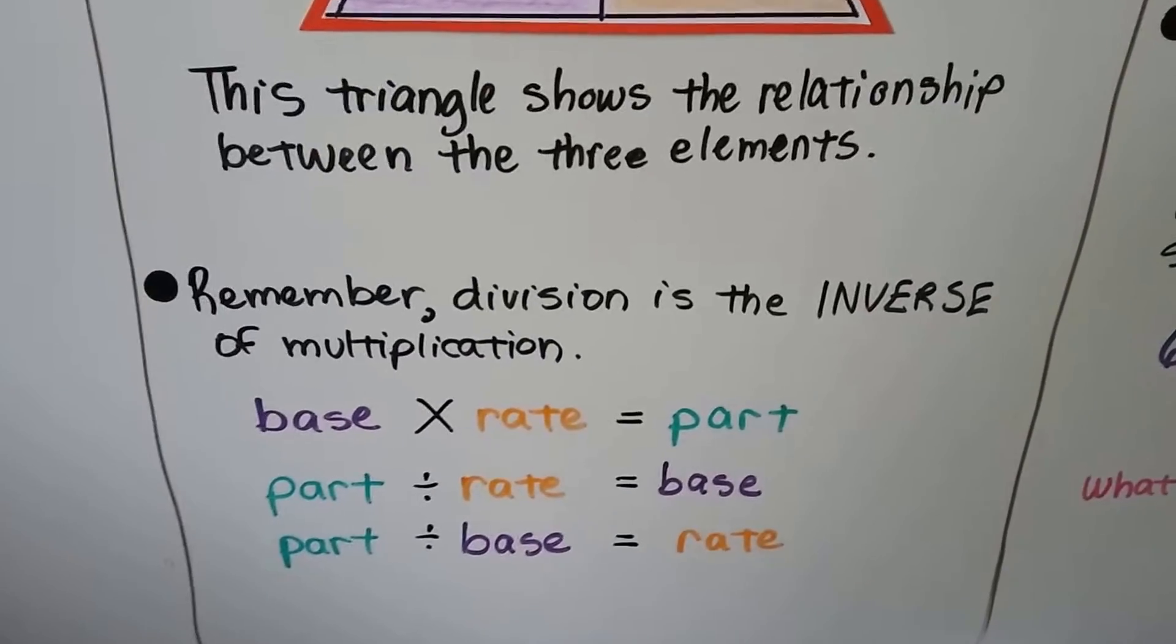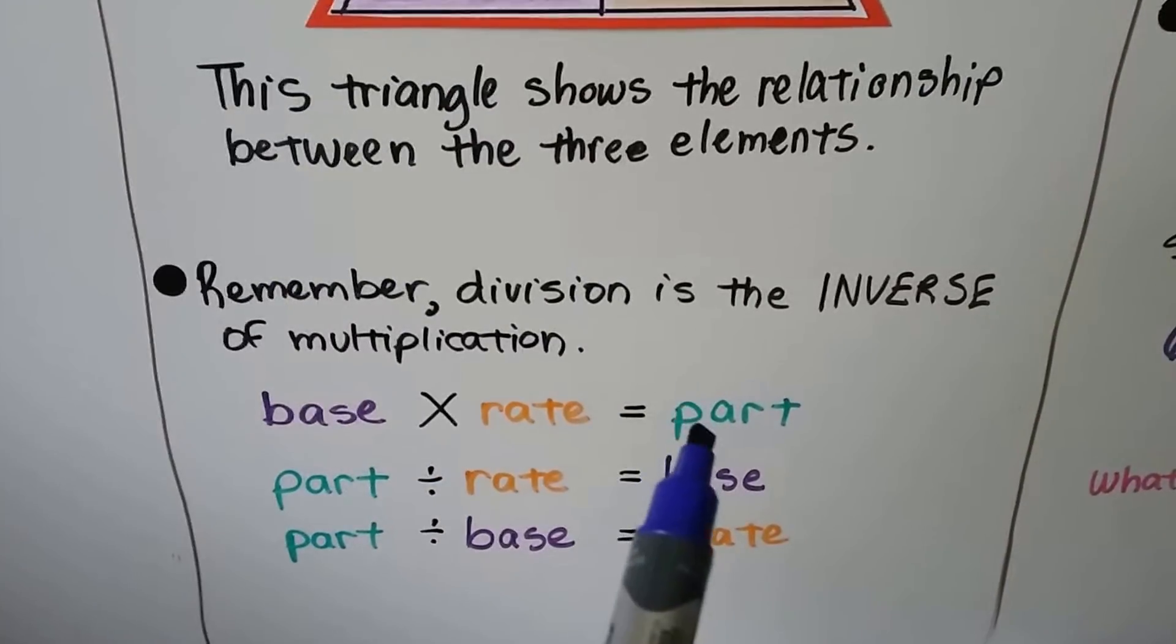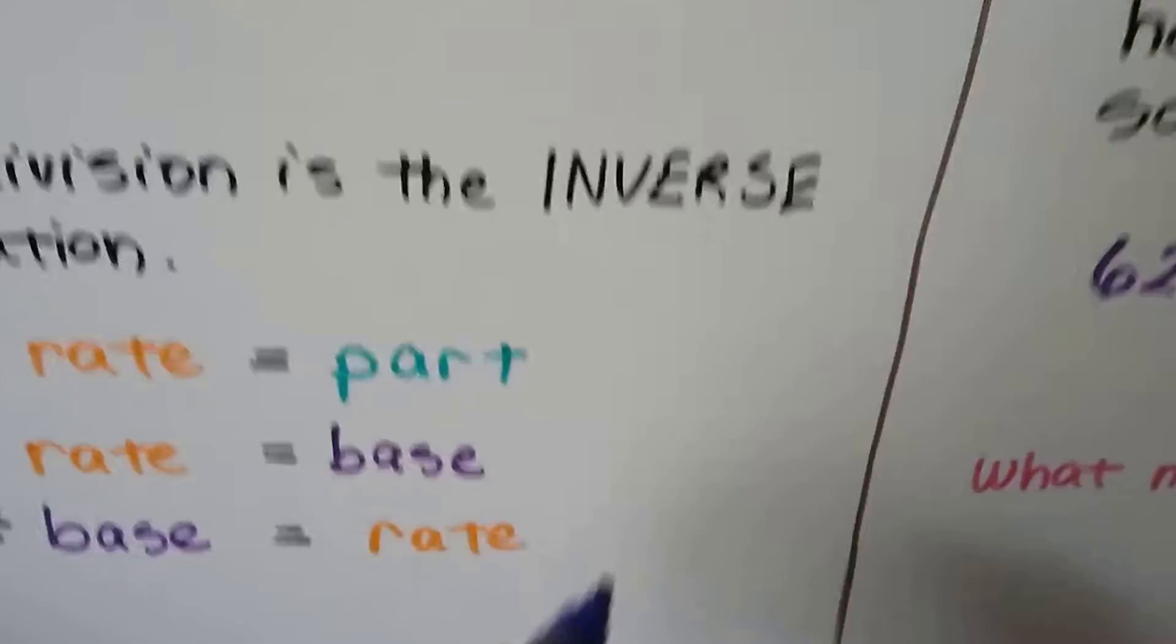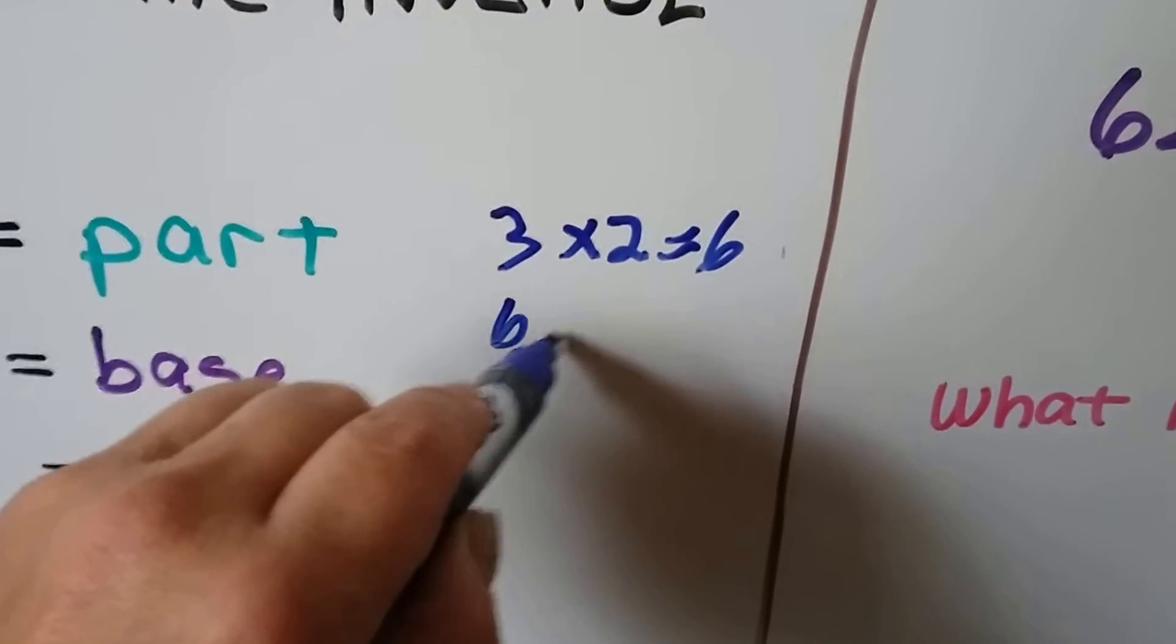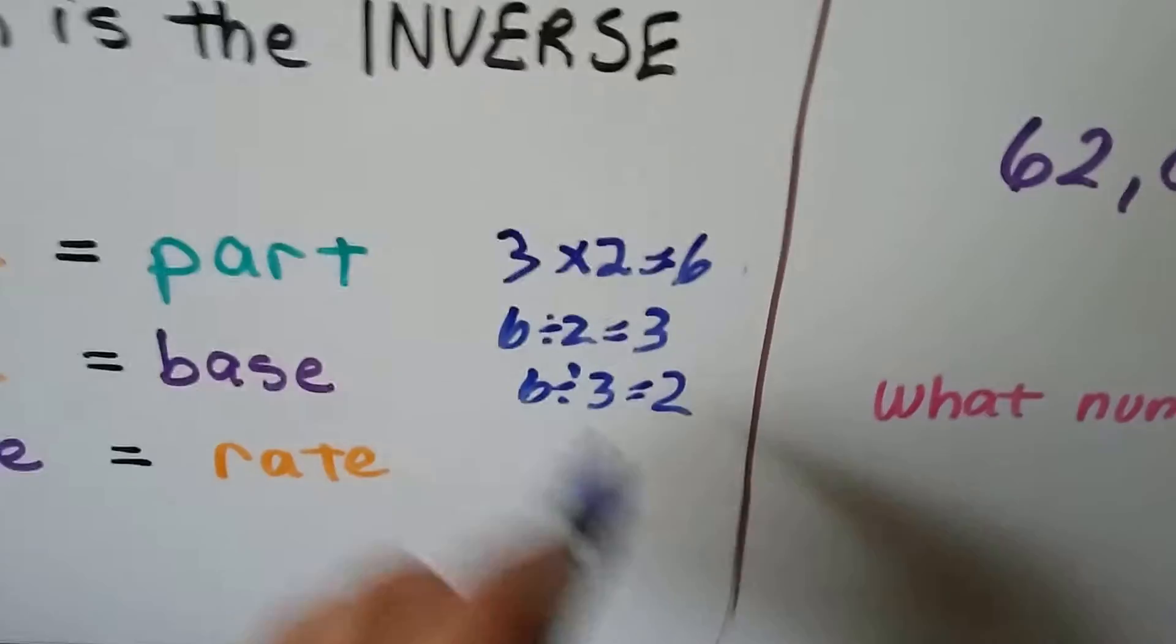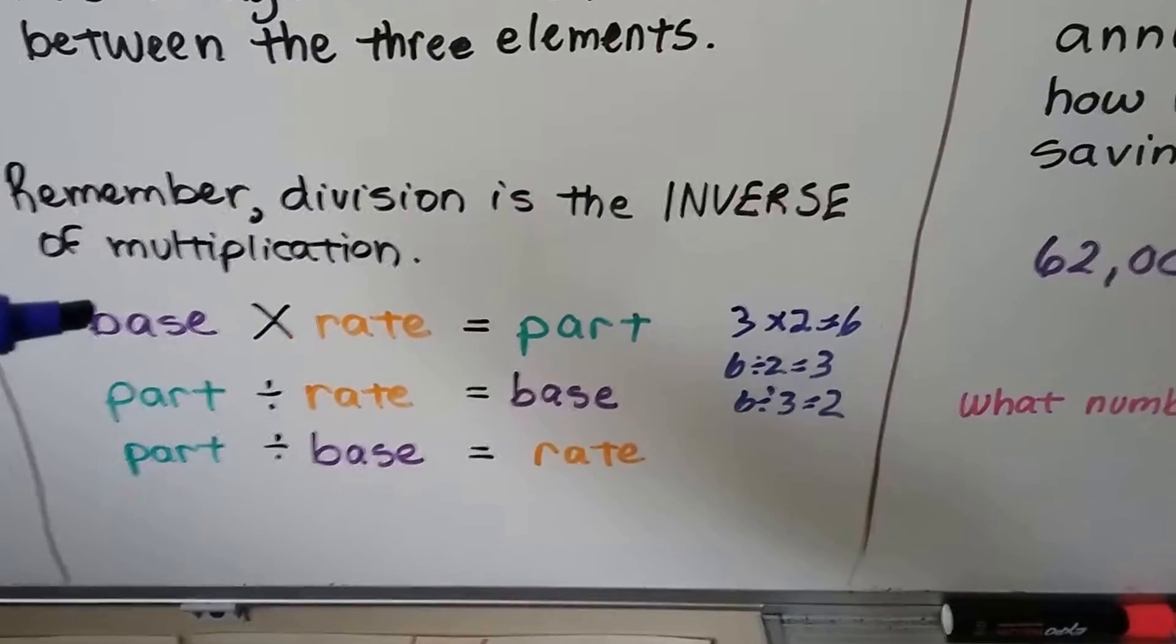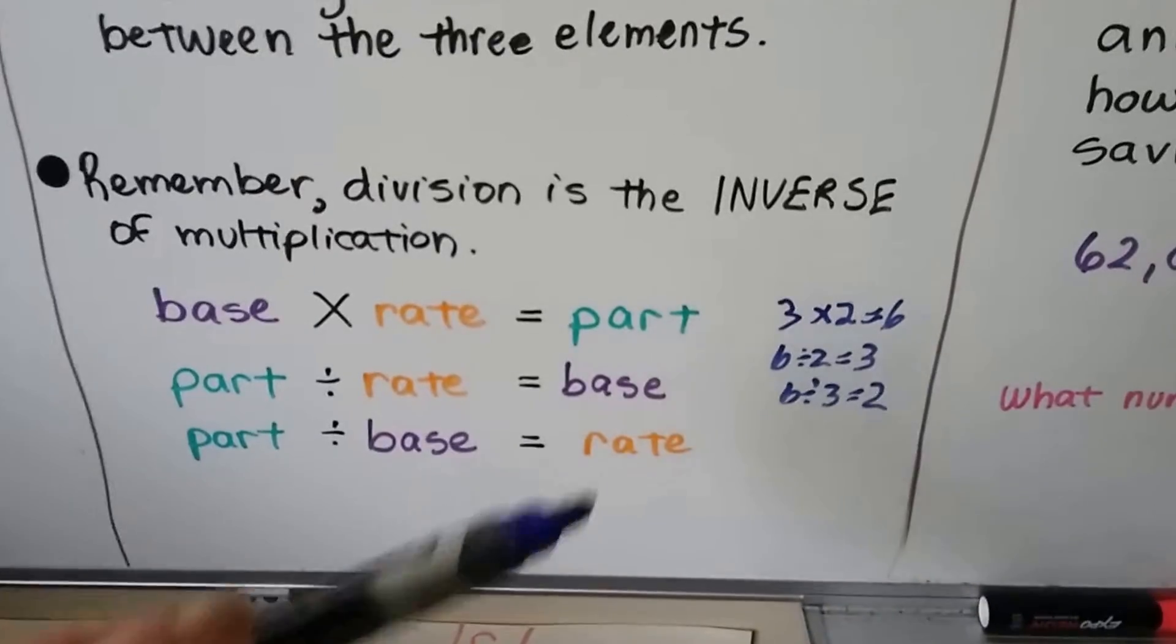So remember that division is the inverse of multiplication. Here's that percent formula, base times rate equals part. Well, we could go the inverse and do part divided by rate equals base, or part divided by base equals rate. This is no different than if we did 3 times 2 equals 6, and then did 6 divided by 2 equals 3, or 6 divided by 3 equals 2. It's like fact families, right? They're all related. So this is the inverse of the multiplication problem. So that's why we can do base times rate equals part, and then flip it around to do part divided by rate equals base, or part divided by base equals rate.